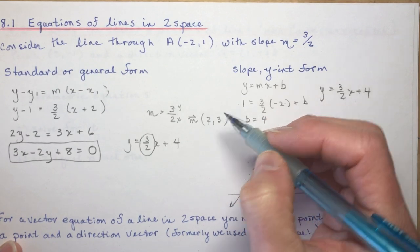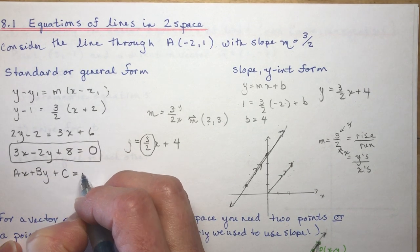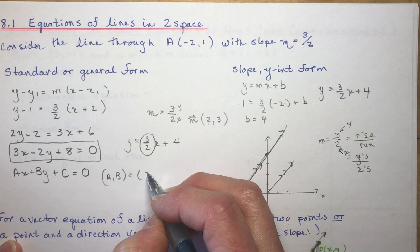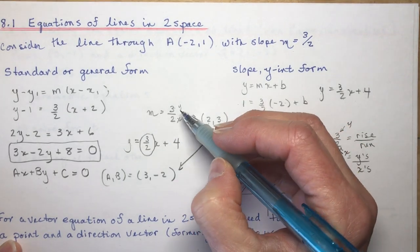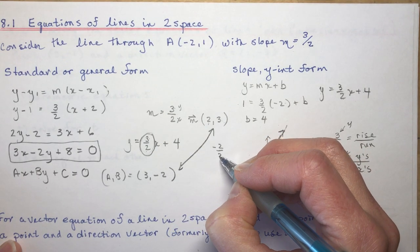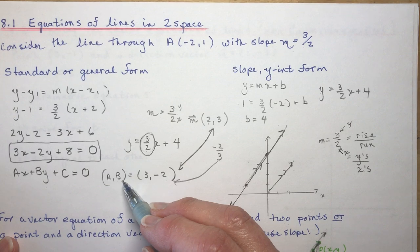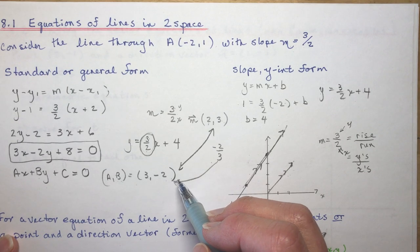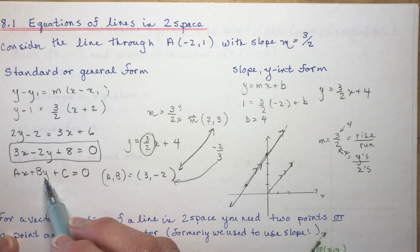If you look at the a and b values here — remember this is like ax plus by plus c equals 0 — your a and b would be 3 and minus 2. Comparing these two, if you asked what the negative reciprocal of 3 over 2 is, you'd say minus 2 over 3. Notice that is (a, b), so a and b represent the normal, or the perpendicular slope to the vector.